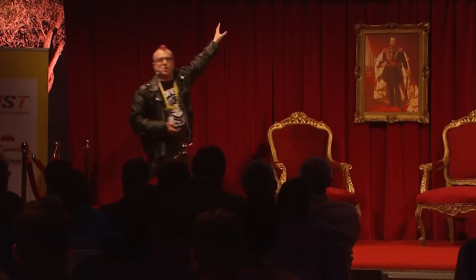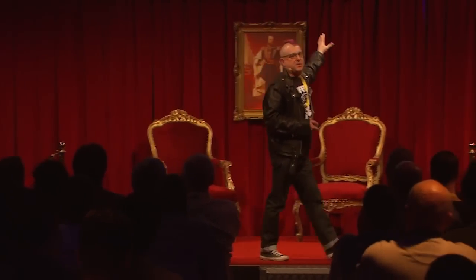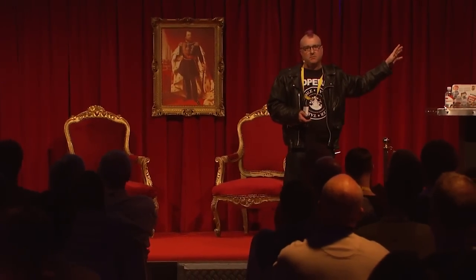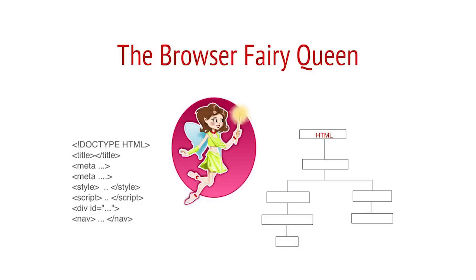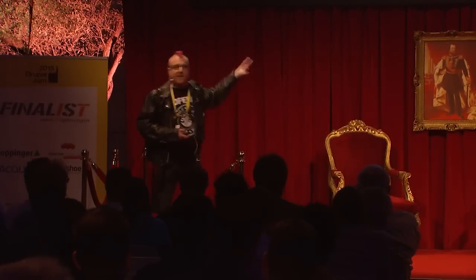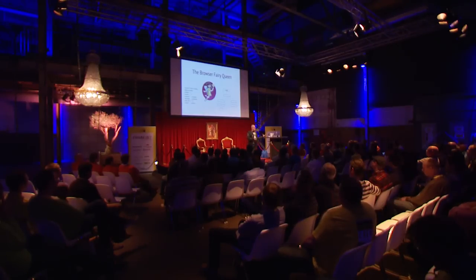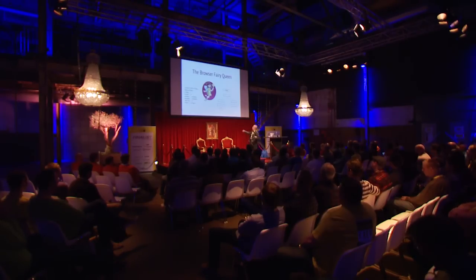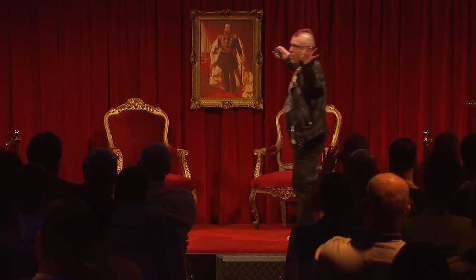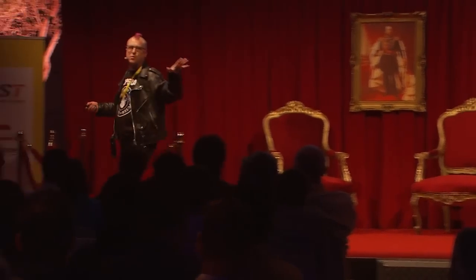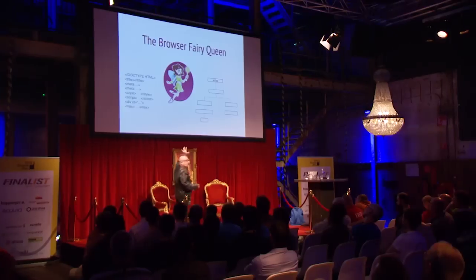One of the fairy queen's jobs when you first request a page is to take your HTML and make a DOM tree. Once she's done it, she doesn't care about your HTML anymore — that's why if you have a heavily scripted page and you view source, the source might have nothing to do with what you're seeing, because the JavaScript and CSS is running on the DOM tree. Once she's turned the HTML into the DOM, that original source is ignored.